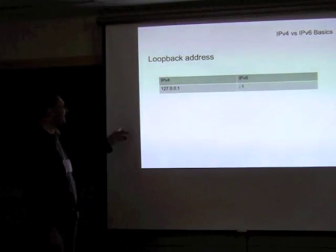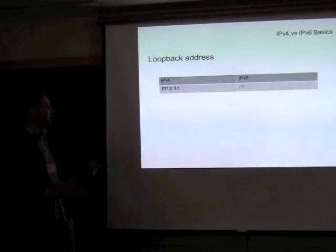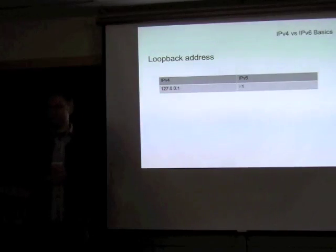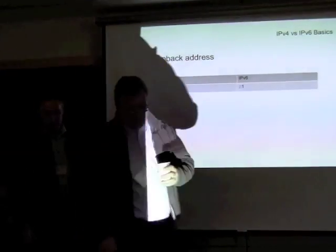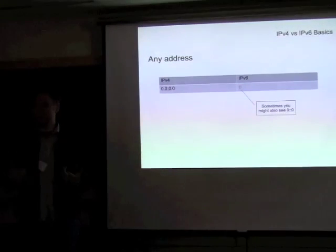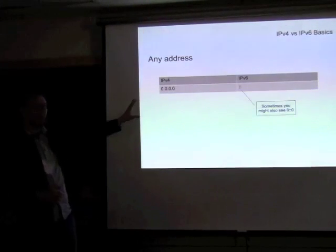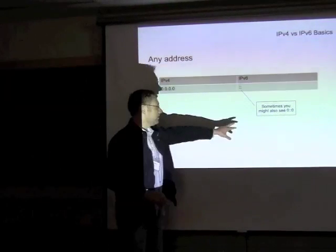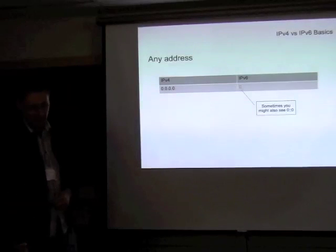At least they made one improvement: the loopback address. For IPv4 it's 127.0.0.1; for IPv6 it's just ::1, because you drop the seven zeros and leave the one. There's also the counterpart 'any' address. For servers, the any address means you're listening on all interfaces. For IPv4 it's all zeros; for IPv6 it's also all zeros, but compressed to ::, or sometimes seen as 0::0.